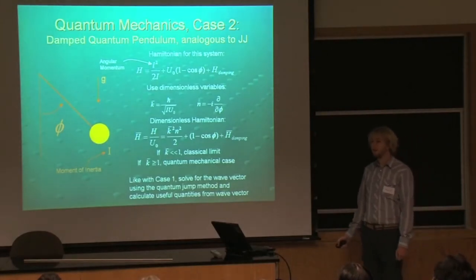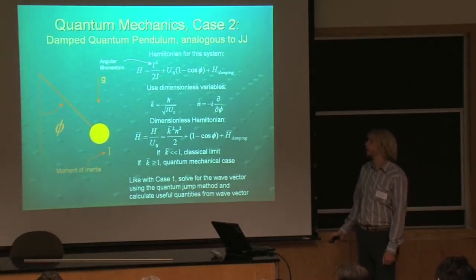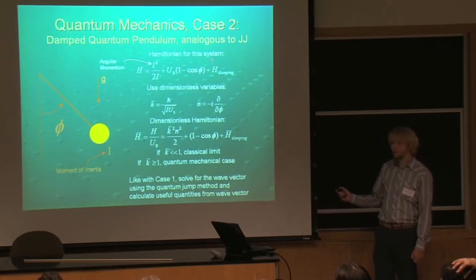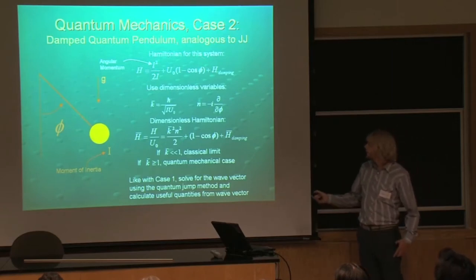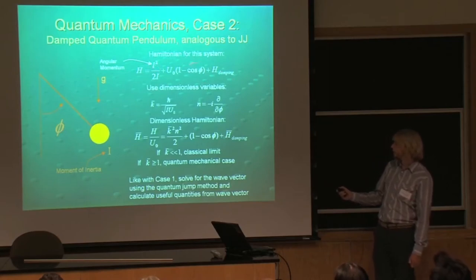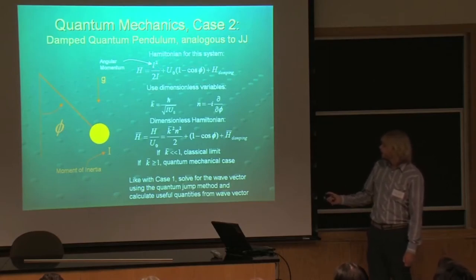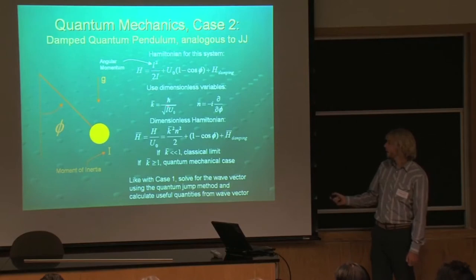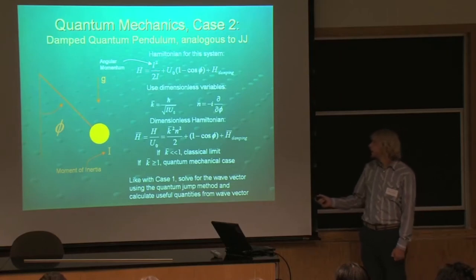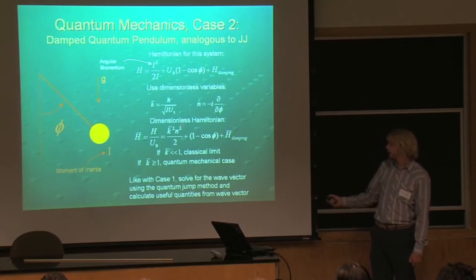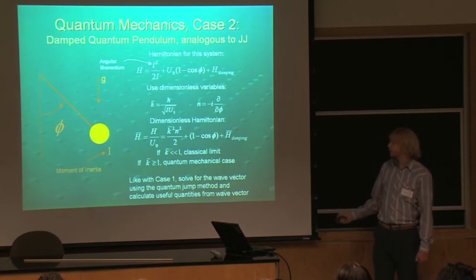We then moved on to another quantum mechanical case, where we looked at a damped quantum pendulum, which is analogous to a Josephson junction — a very similar system. The Hamiltonian for this system is shown here, where we have angular momentum operators and some other things. We would like to use dimensionless variables, so this here is a kind of scaled angular momentum operator, and this multiplied by M exactly equals the previous angular momentum operator. An interesting note: it depends on the moment of inertia of the pendulum and the gravitational potential energy.